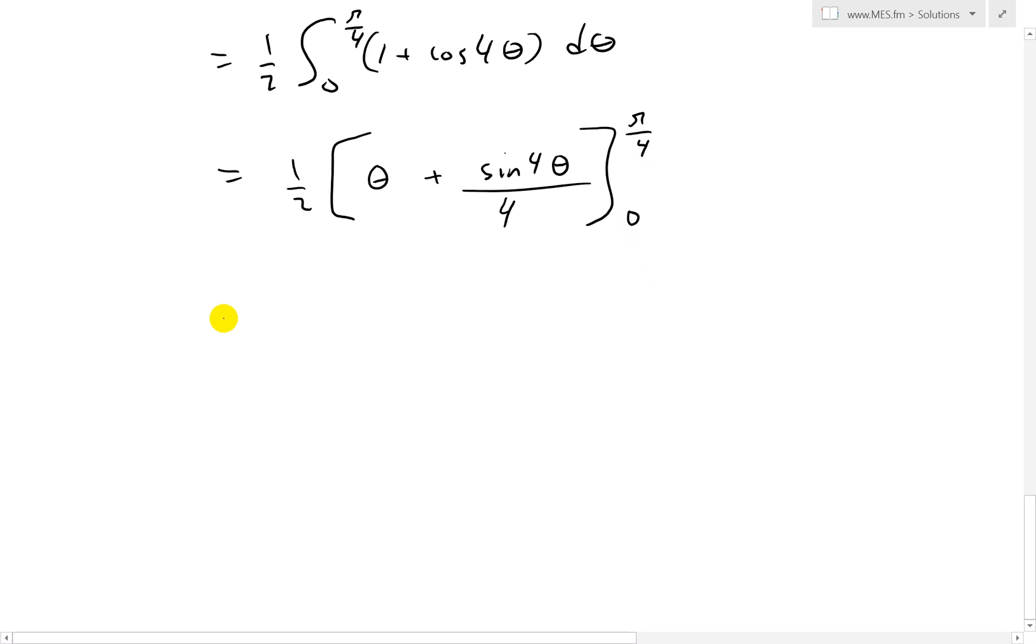So you could plug those inside. We have 1 half, now we have pi over 4 evaluated, plus sine of 4 pi over 4 over 4. And these just cancel, we're just left with - that's just sine pi. And then we have to subtract, putting in 0. So 0 plus sine of 0, like that.